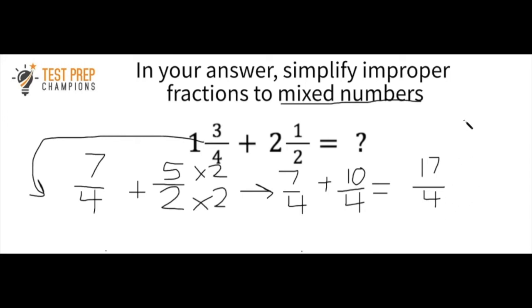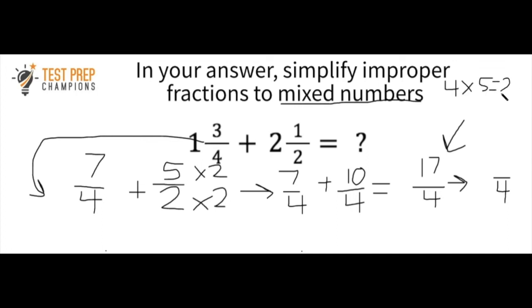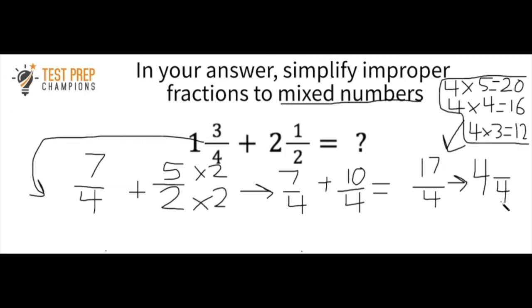We're not done yet — we need to convert seventeen over four back to a mixed number. We think: four times what gives a number close to seventeen but not over it? Four times five is twenty — too high. Four times four is sixteen, which works. Then seventeen minus sixteen is one. So the final answer is four and one-fourth.